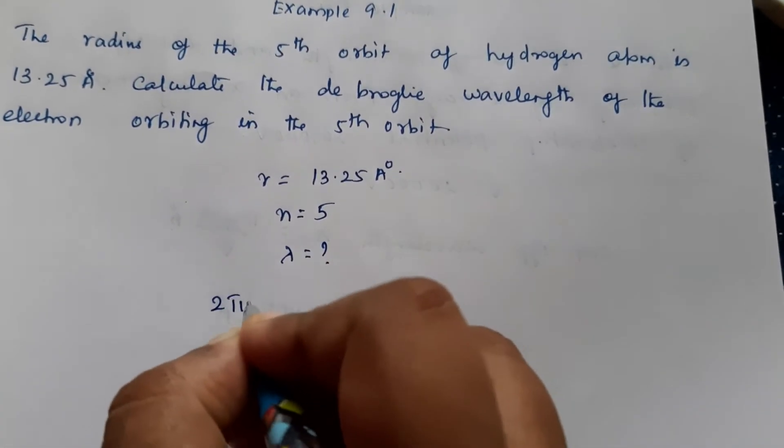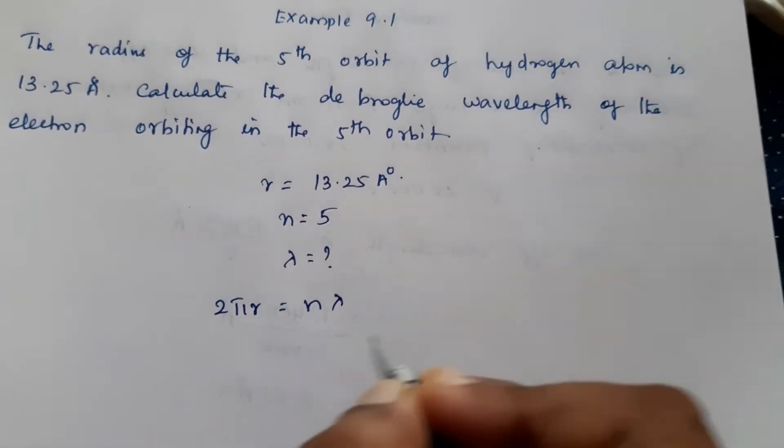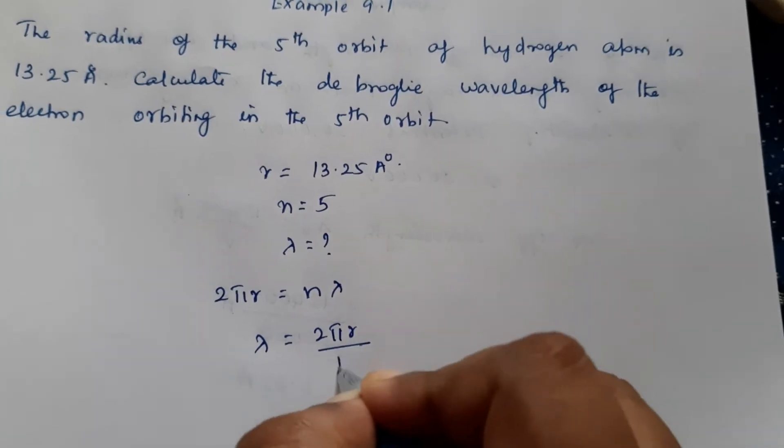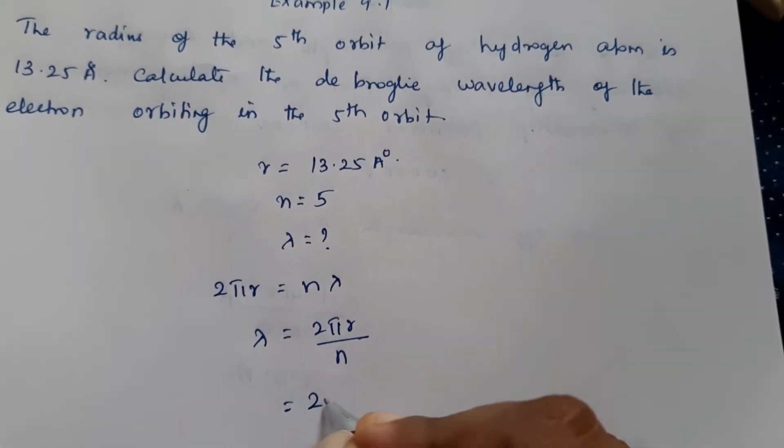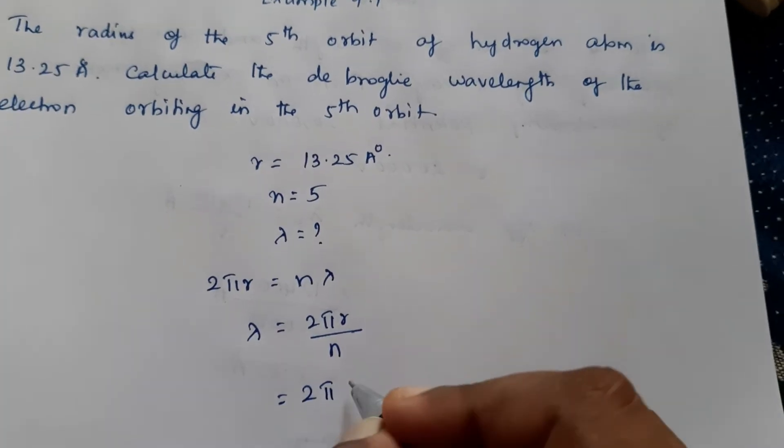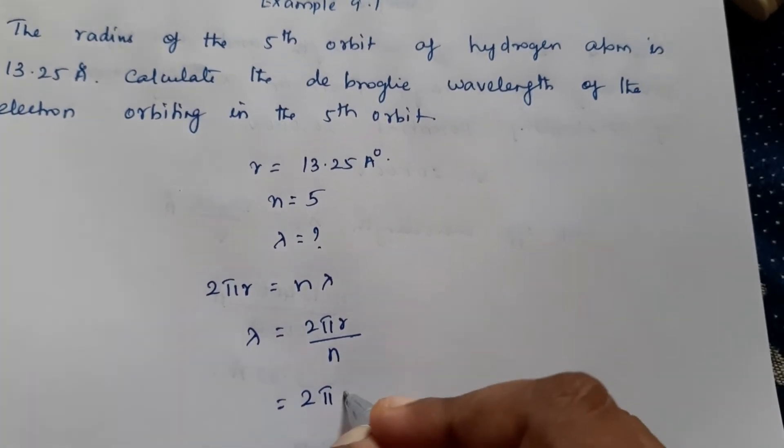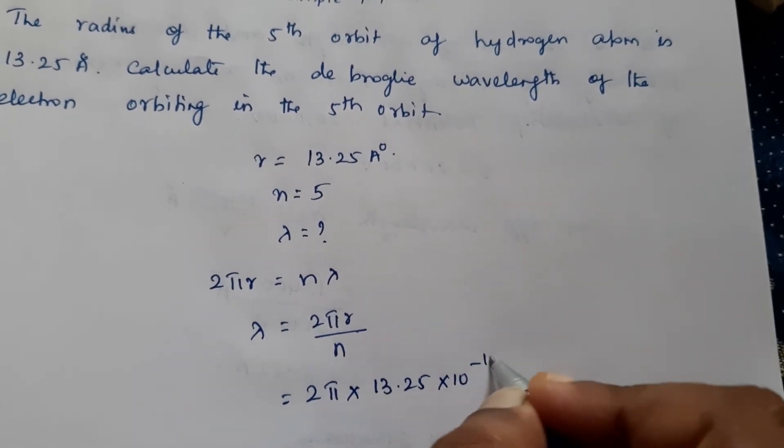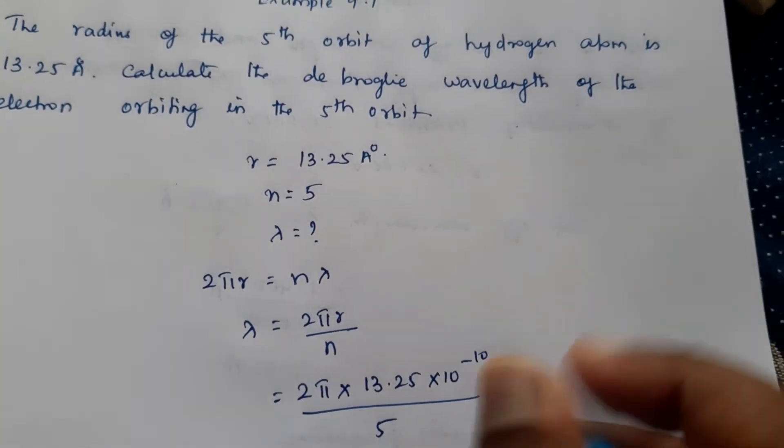We have to use the formula 2πr = nλ, so lambda = 2πr/n. Substituting: 2π into 13.25 into 10^-10 divided by 5.